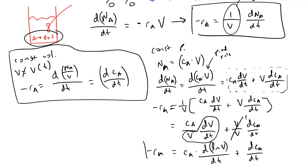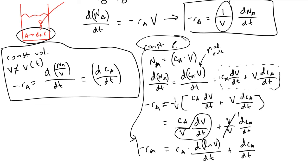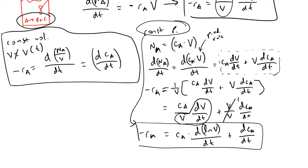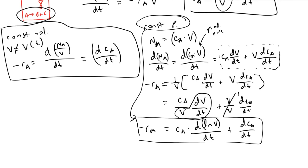And so this is how when we're dealing with a constant pressure process we have a new relationship between the rate of our reaction and the parameters of our system. So our rate of reaction for species A is impacted not only by the concentration of A but also the volume in this type of relationship.